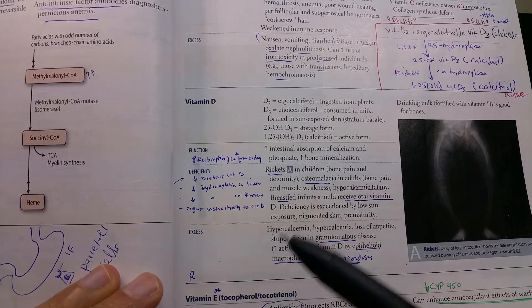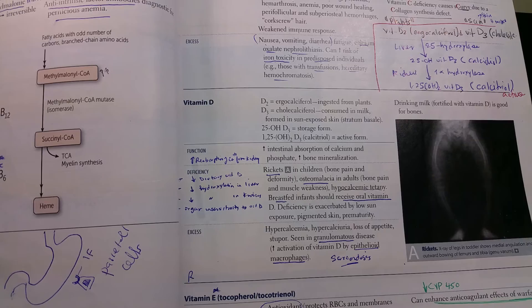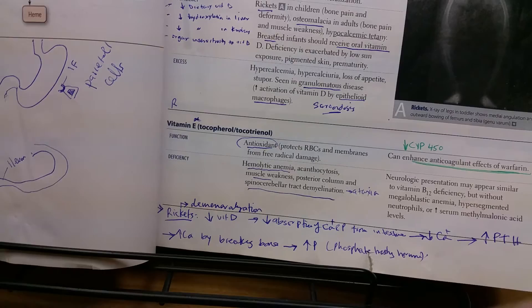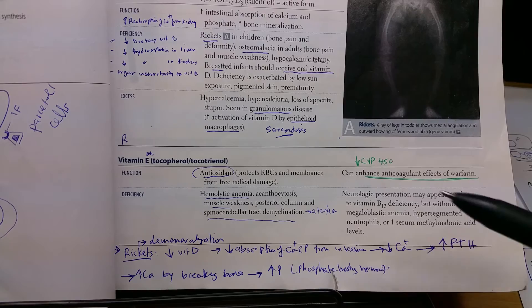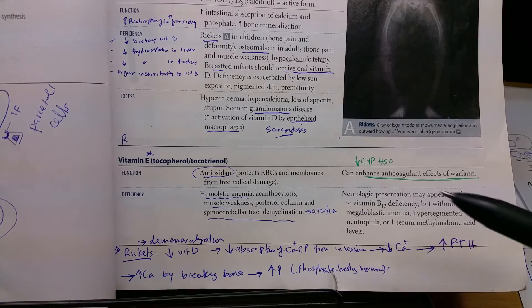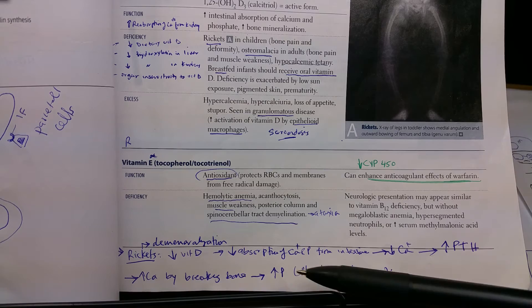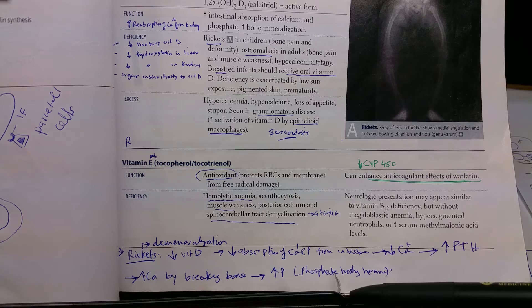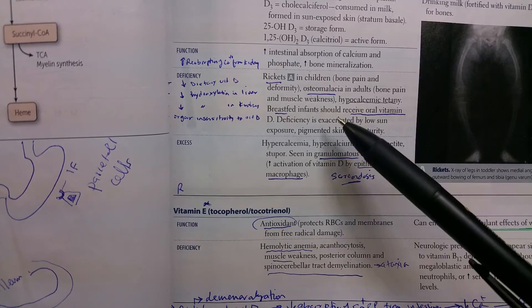What happens in the deficiency? Something called rickets. When there is low vitamin D, there's demineralization. How does it happen? There is decreased absorption of calcium and phosphate from the intestine, so low serum calcium. What happens is the parathyroid hormone increases, and it tries to increase the serum calcium by breaking the bone, causing bone demineralization, and it's a phosphate-trashing hormone, so it decreases phosphate.